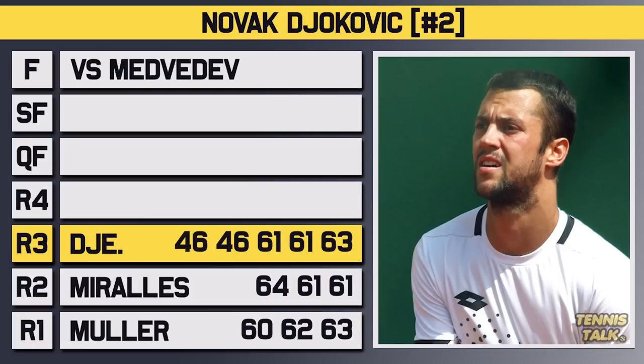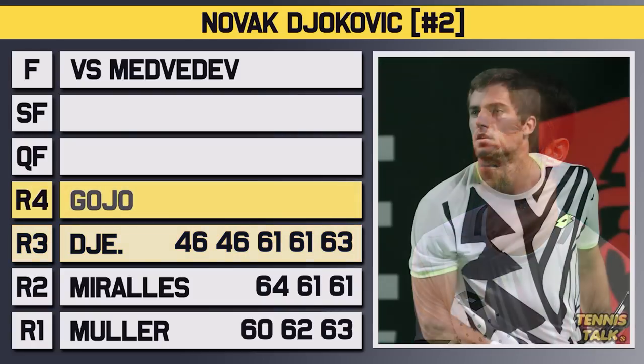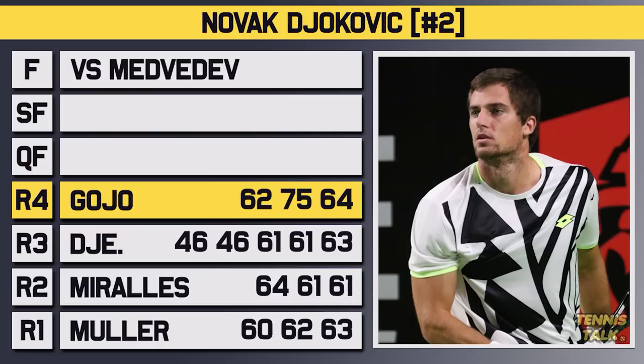In the fourth round he'd take on qualifier Goyo and after a close second set, Djokovic would get through in straights 6-2, 7-5, 6-4 to advance to the quarterfinals. In the quarterfinals Djokovic would take on the number 9 seed Fritz and even though Fritz put up a fight in the third, Djokovic would get through in straights 6-1, 6-4, 6-4 to advance to the semifinals.